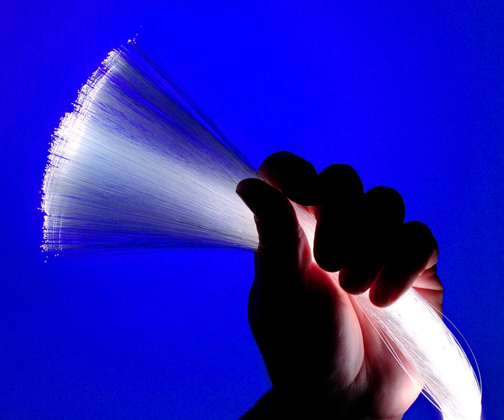Cellular and PCS systems use several radio communications technologies. The systems divide the region covered into multiple geographic areas. Each area has a low-power transmitter or radio relay antenna device to relay calls from one area to the next area.